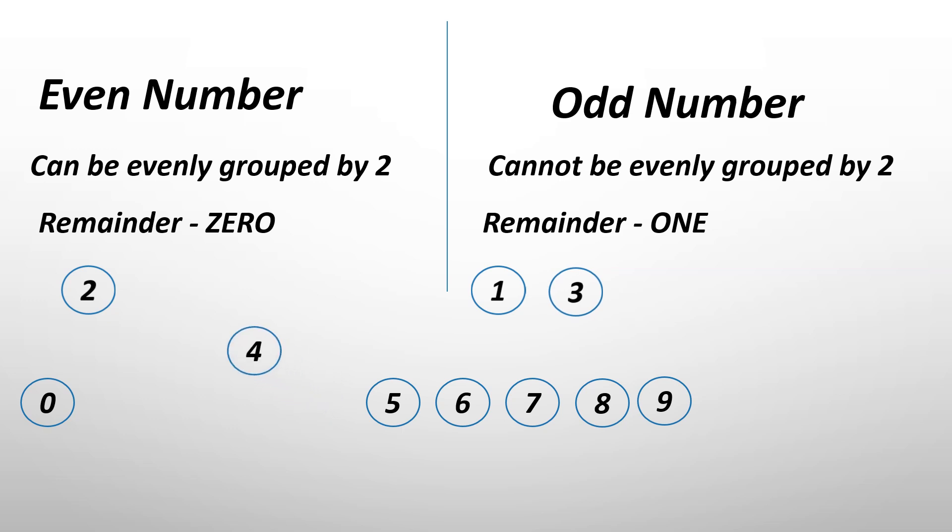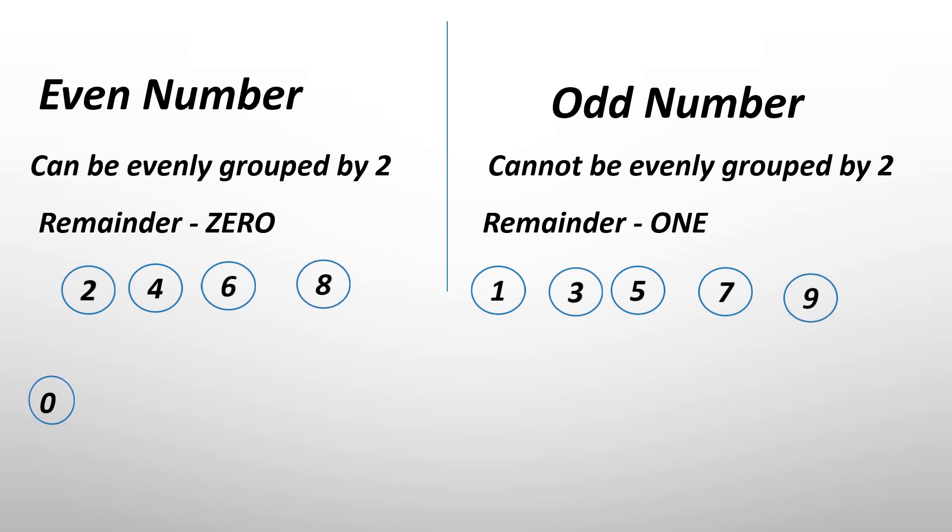Three goes in the odd section. Four goes in the even section. Five goes in the odd section. Six goes in the even. Seven goes in the odd. Eight goes in the even. Nine goes in the odd. And now where does zero go? It goes in the even section because zero is divisible by two and there's no remainder.